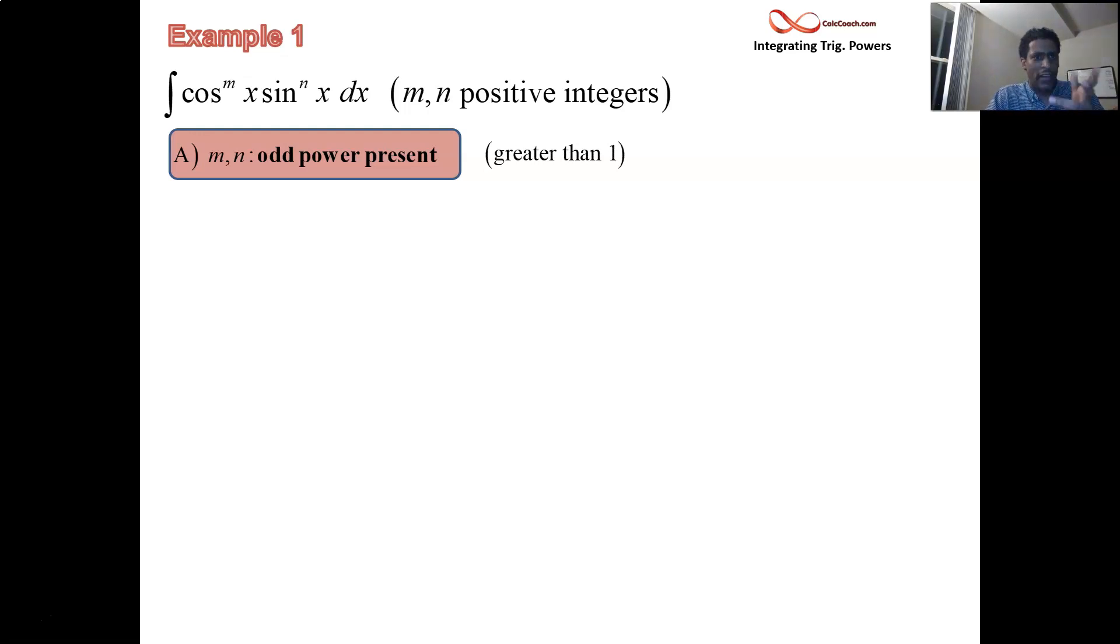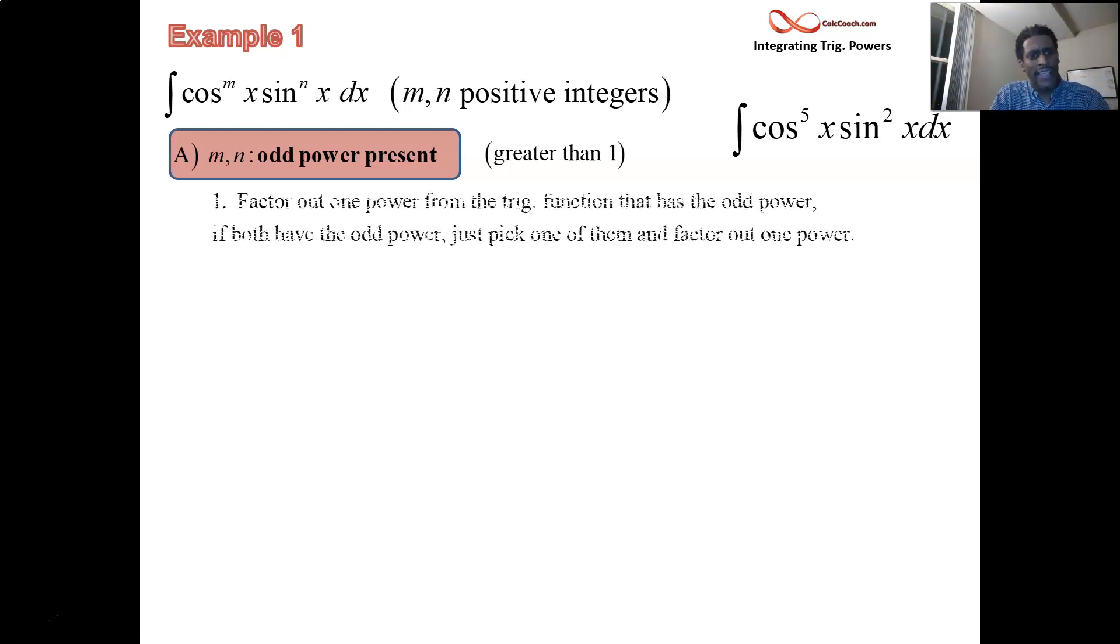So here's my example. I call it example one. I have cosine who's raised to the fifth and sine who's squared. There's an odd power present, cosine is raised to the fifth. According to the method, I need to take away, not take away but sort of factor out, not out of the integral but just put aside cosine x and leave those four cosine x still there. The sine squared, don't do anything to it.